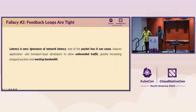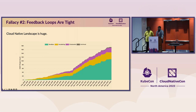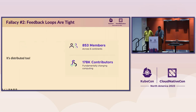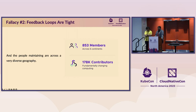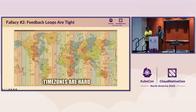The next fallacy is: latency is zero. If you ignore network latency, there can be packet losses and unbounded traffic, resulting in wasted network bandwidth. How does this relate to cloud-native communities? We have over 175 cloud-native projects in the landscape. According to the 2022 project report, Chris mentioned we have 220,000-plus contributors in the cloud-native ecosystem, highly distributed across geographies.